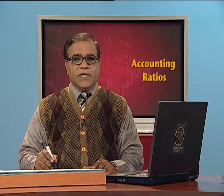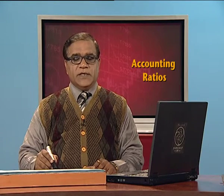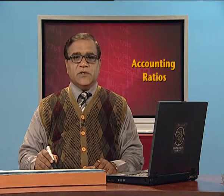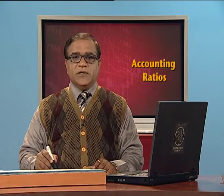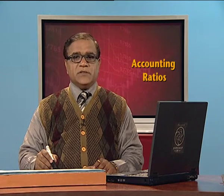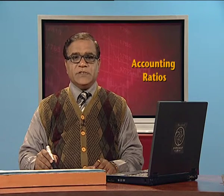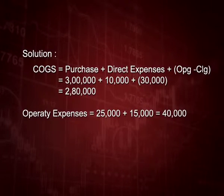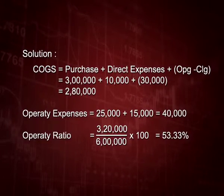Operating ratio equals cost of goods sold plus operating expenses, divided by net sales, multiplied by 100. That is 2 lakh 80 thousand plus 40 thousand, equalling 3 lakh 20 thousand, divided by net sales of 6 lakh, multiplied by 100, giving an answer of 53.33 percent.